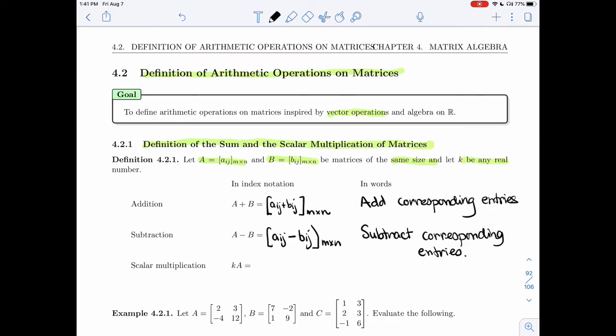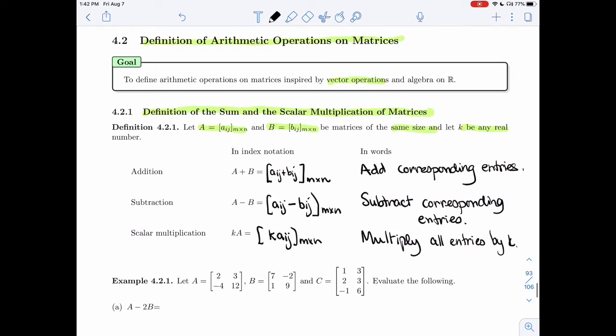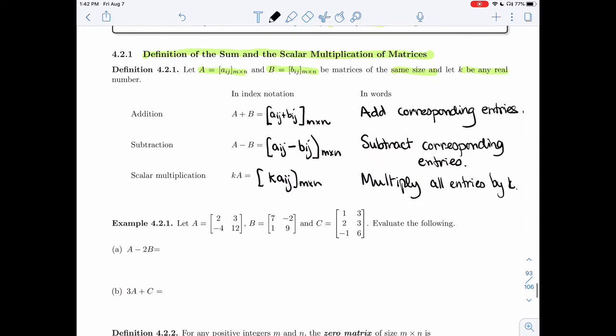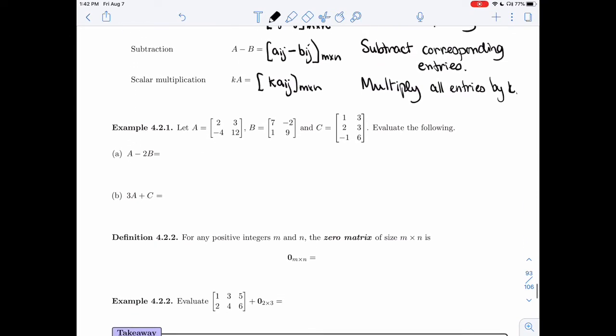Scalar multiplication, I'm going to replace each entry by K times that entry. So I'm going to multiply every single entry by K. All right, so these operations are very close to the operations we had on vectors. It's just that we do it on rectangles instead of on just one line.